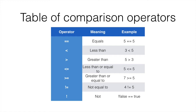The exclamation mark means NOT — it inverts the comparison. If false is false, then not-false is true. So, as we can see in the example, !false is the same thing as true.